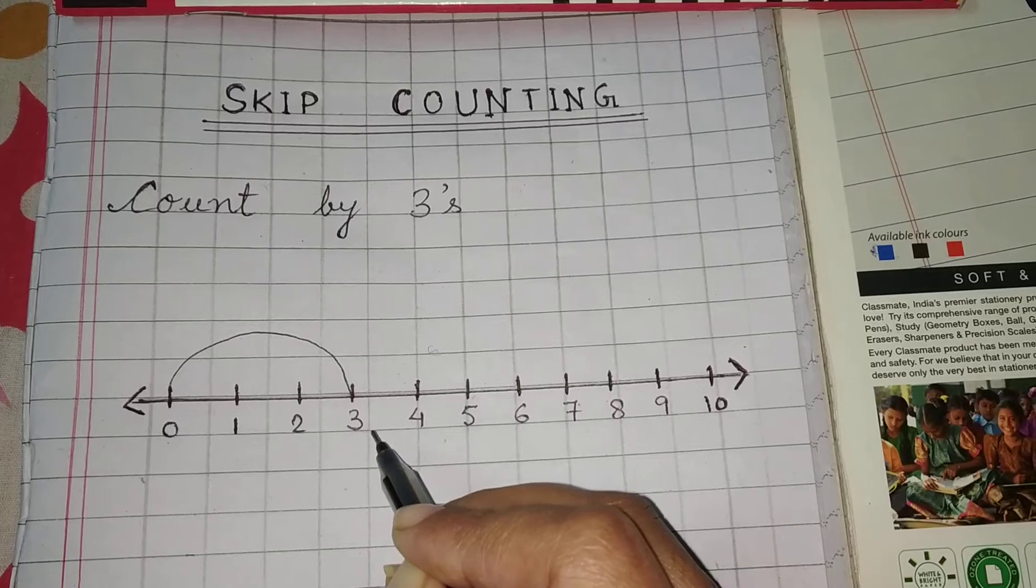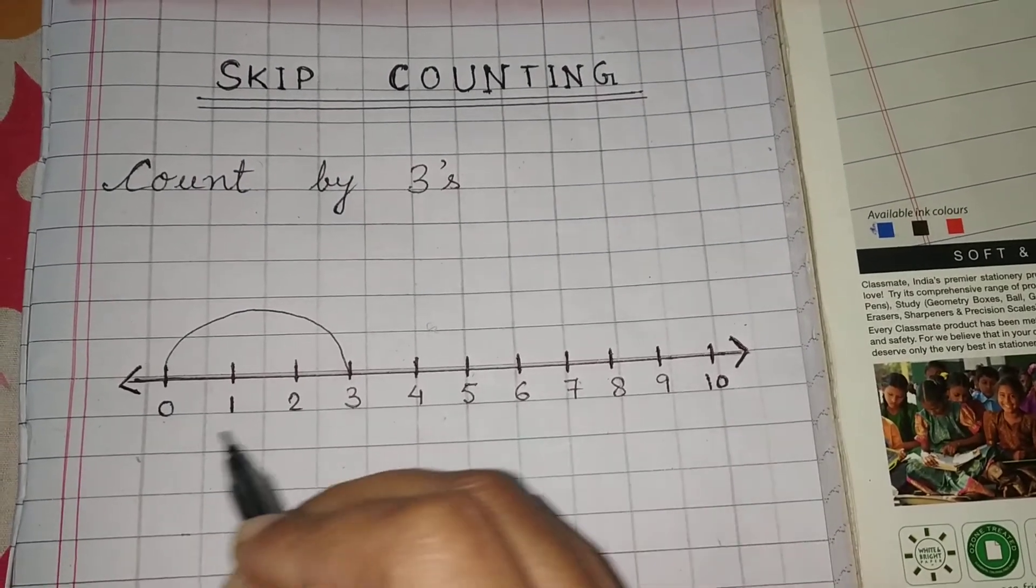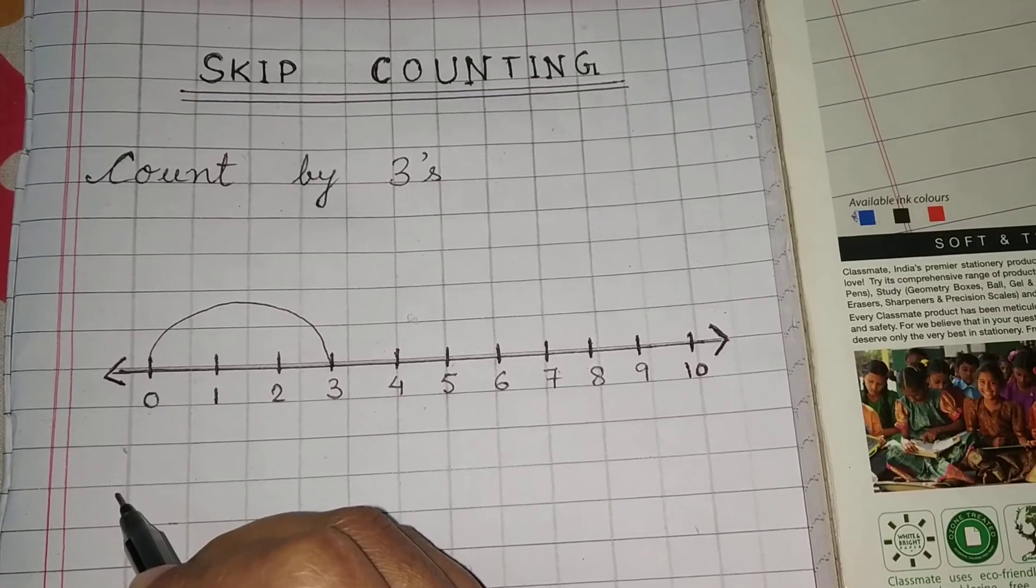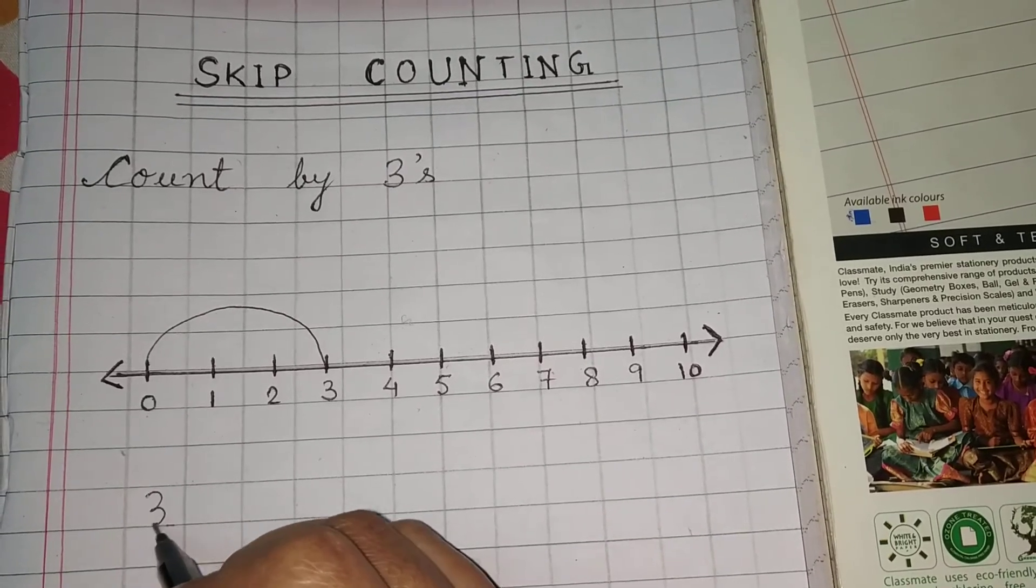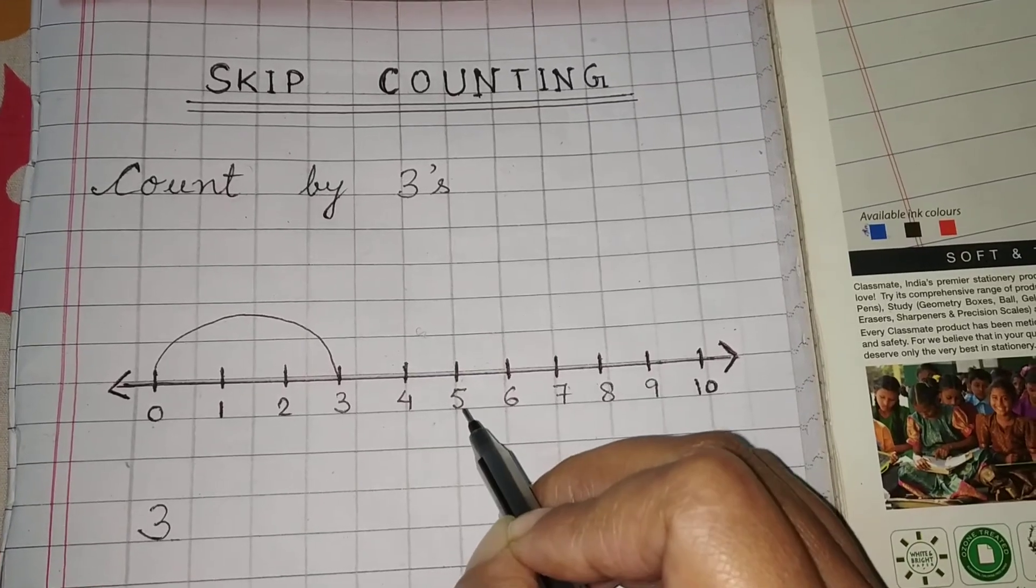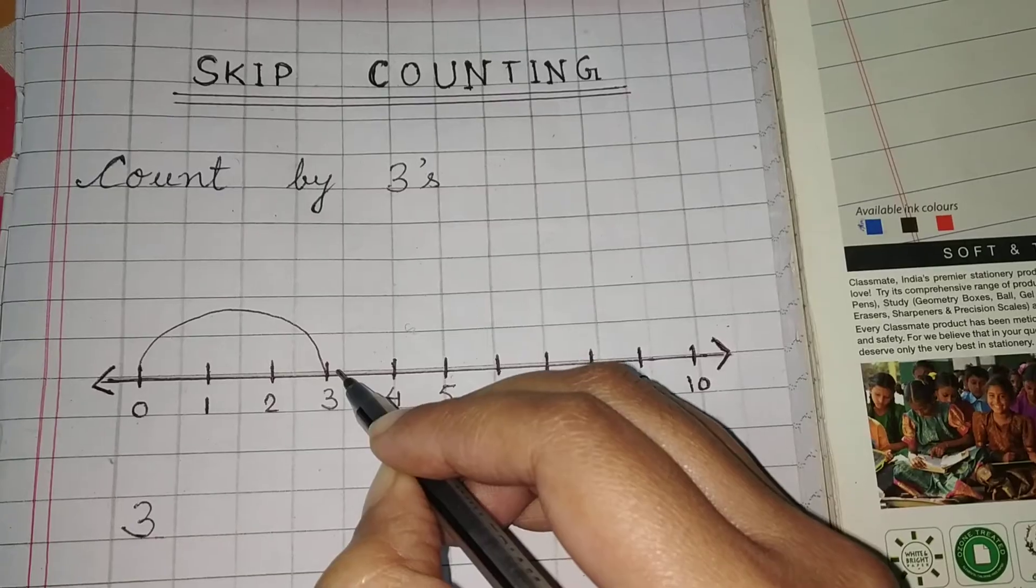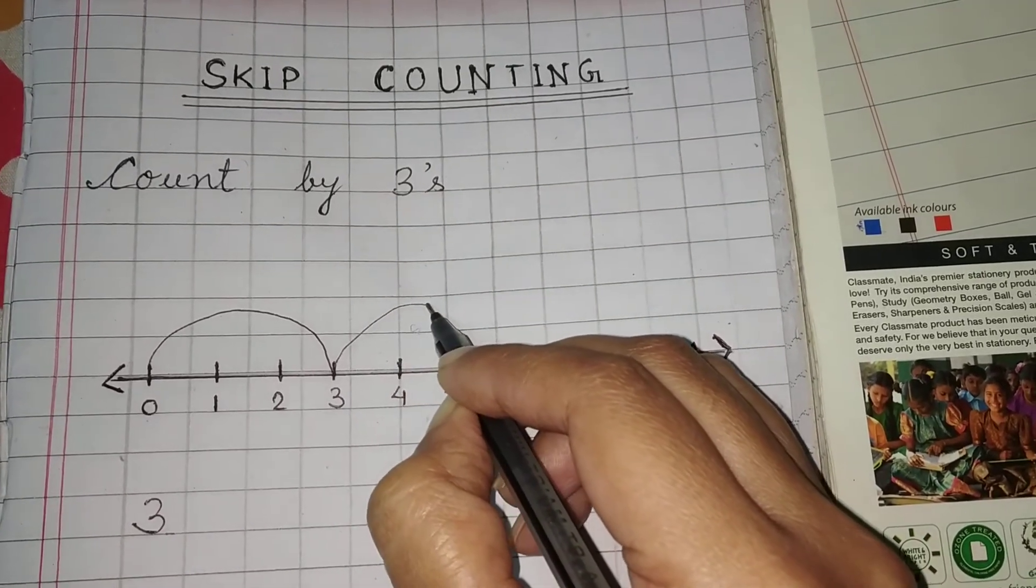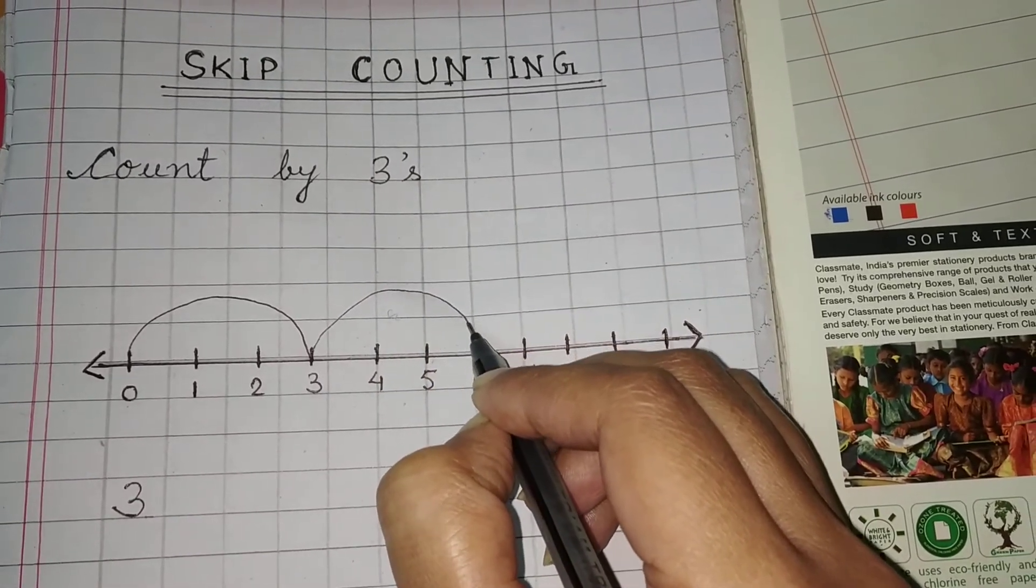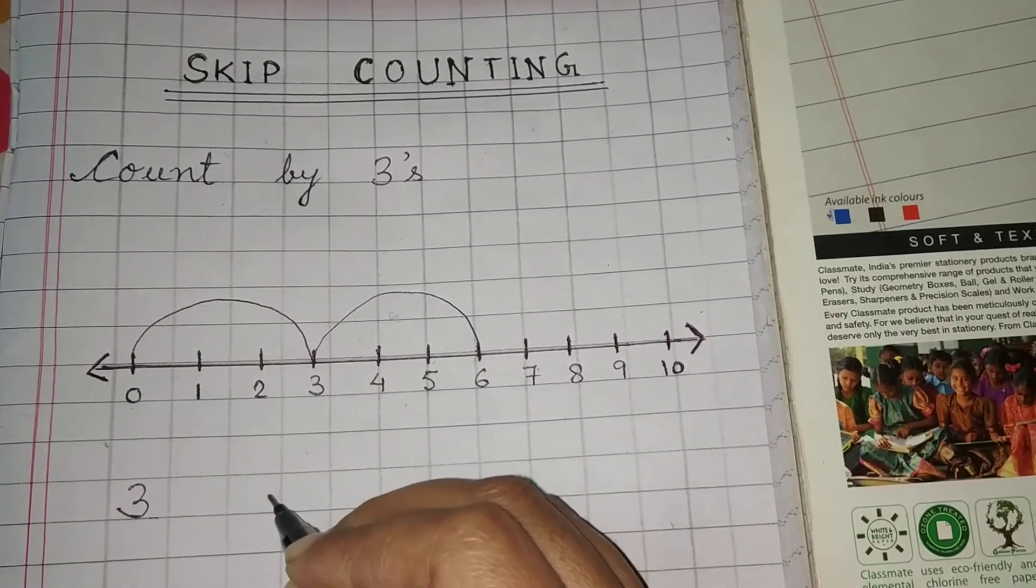So the first number which comes in skip counting by three is the number three. We will write number three here. Next, one, two, three, so the next is six. Six, so we will write here six.